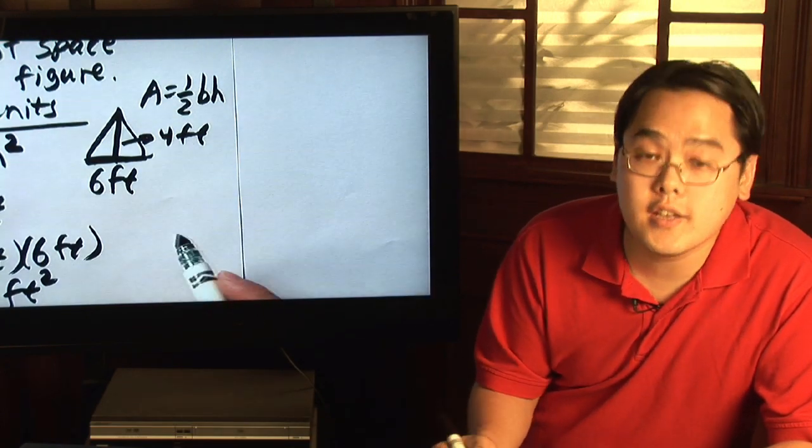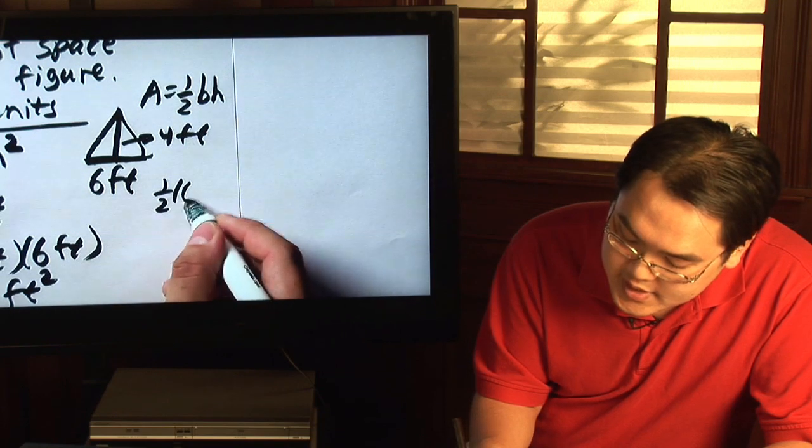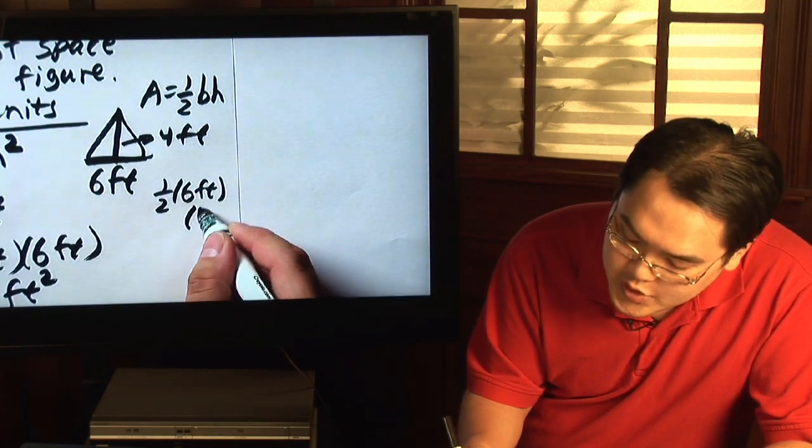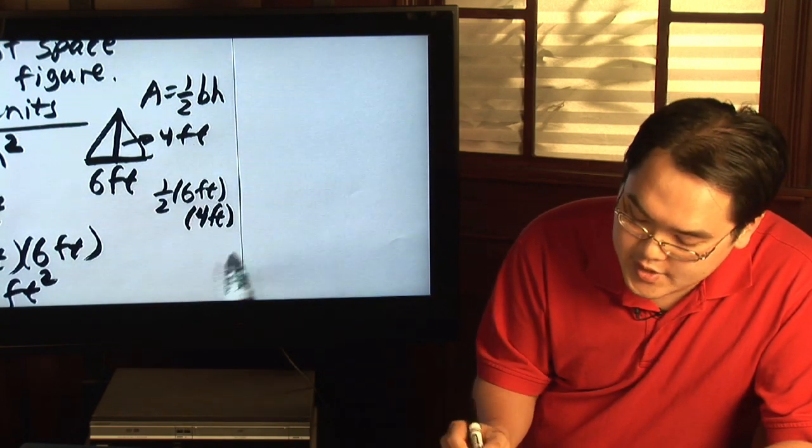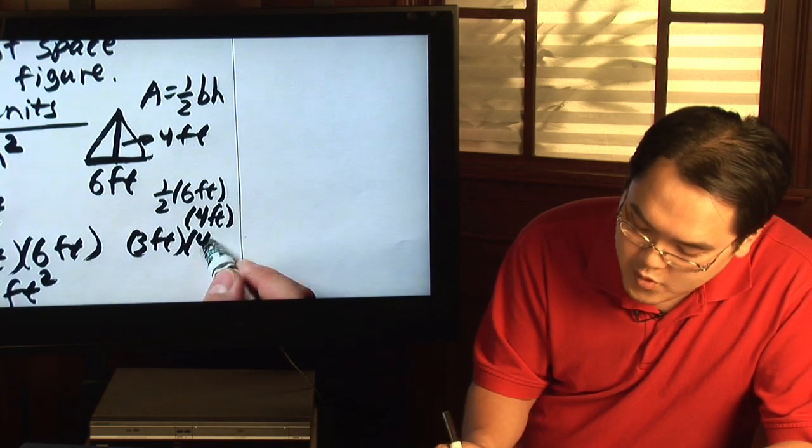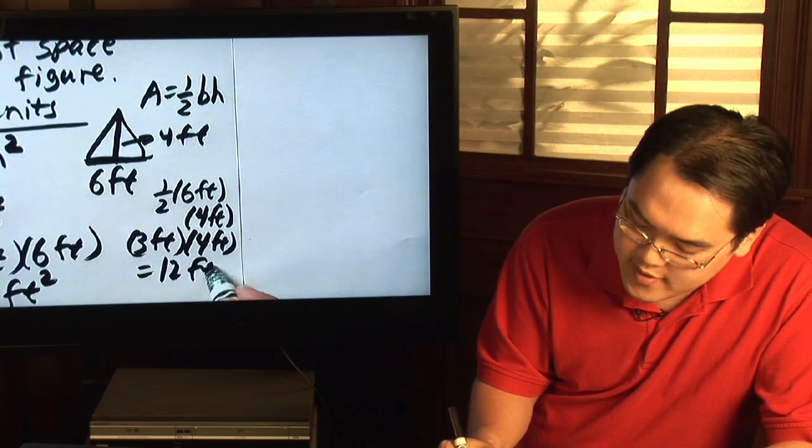Plugging everything back in you will have one-half, the base is six feet times the height which is four feet. Half of six is three feet times four feet which is equal to twelve square feet.